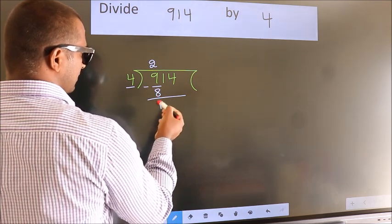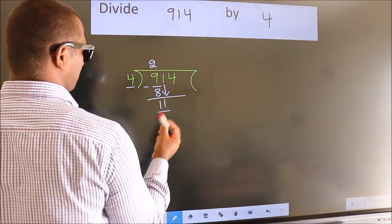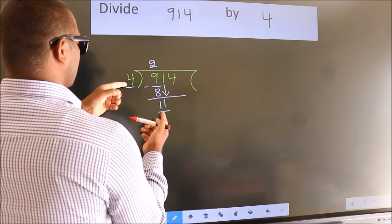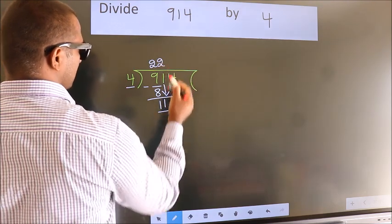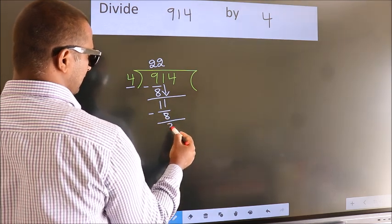After this, bring down the beside number, so 1 down, so 11. A number close to 11 in 4 table is 4 times 2, which is 8. Now we subtract, we get 3.